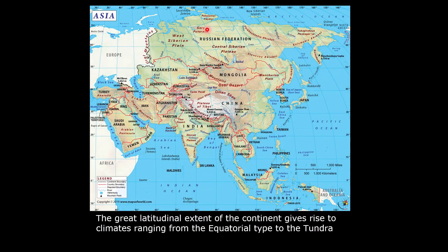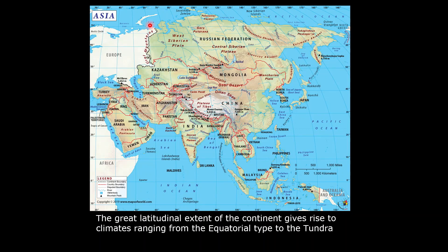The great latitudinal extent of the continent gives rise to climates ranging from equatorial regions in the south and southeast to the tundra type of climate in the north. Due to its large latitudinal extent extending from the equator to the Arctic, the continent experiences all types of climates, from a very hot and humid climate in the equatorial regions to a very cold and dry tundra type of climate in the north.